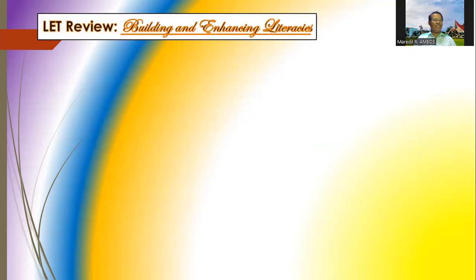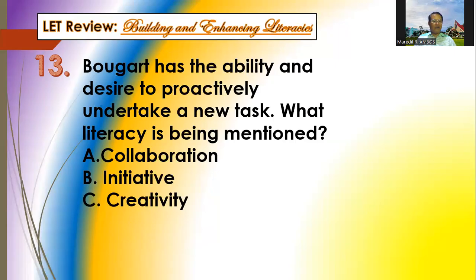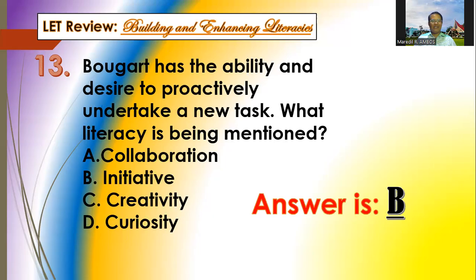Question number thirteen: Bogart has the ability and desire to proactively undertake a new task. What literacy is being mentioned? Options: A is collaboration, B is initiative, C is creativity, and D is curiosity. The answer is letter B — it's initiative, being able to proactively undertake a new task.